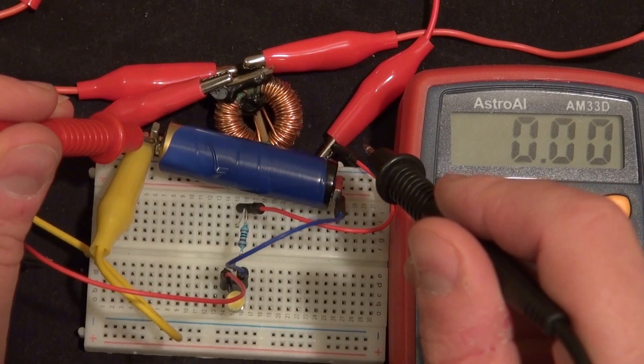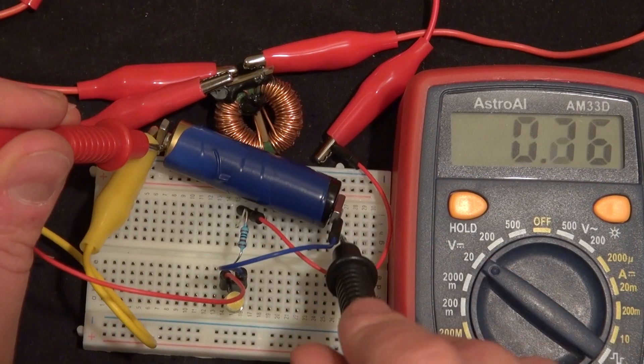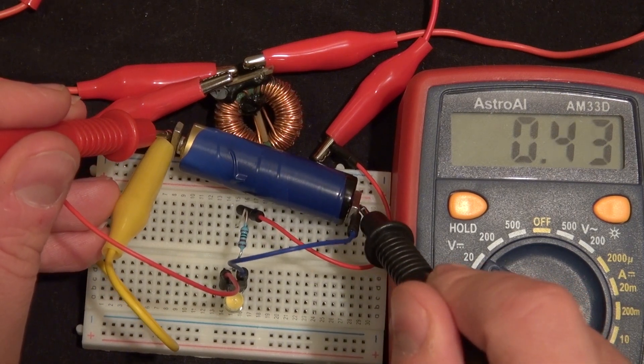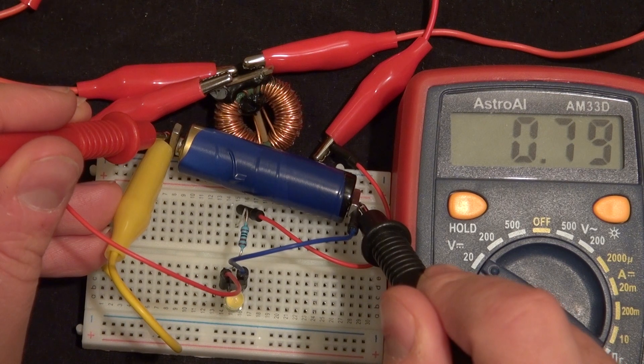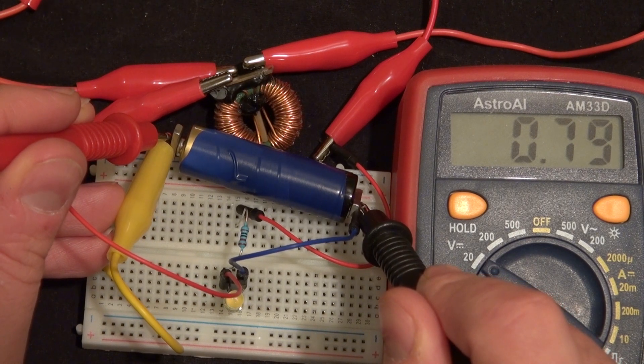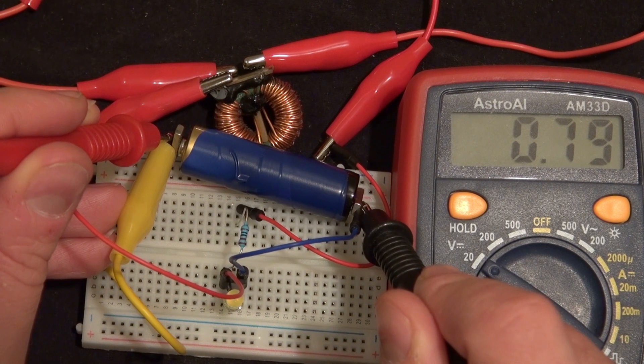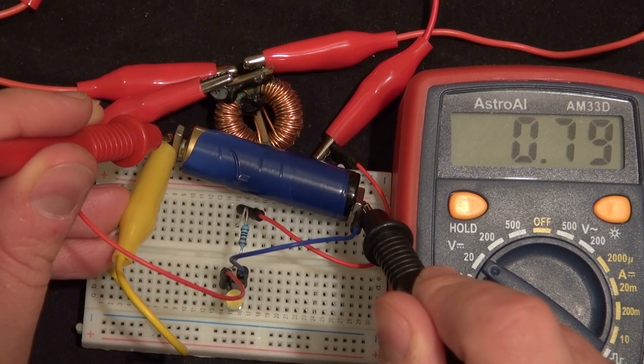Now let's test it with a multimeter and see how much power I have in the battery. And as you can see, it's about 0.8 volts. Very low power. But it's able to power the LED, which is great.